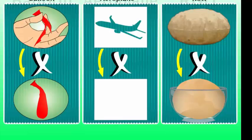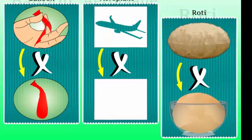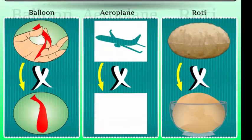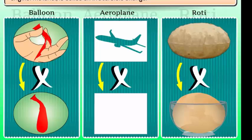From the changes that occurred in these activities, we can conclude that the change in which new substances are formed and we cannot get back the original material is called an irreversible change.